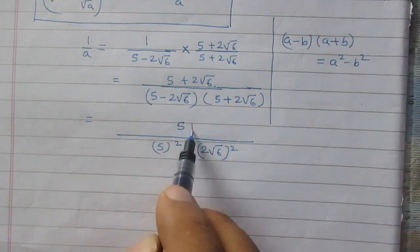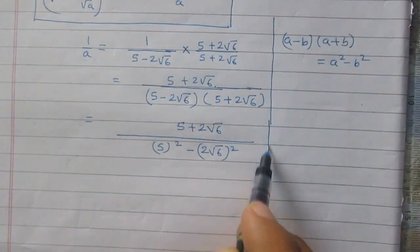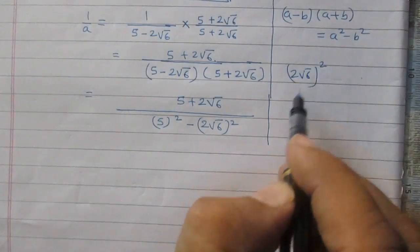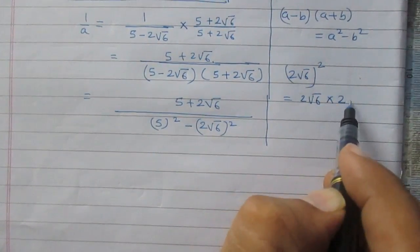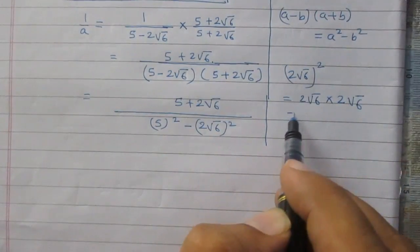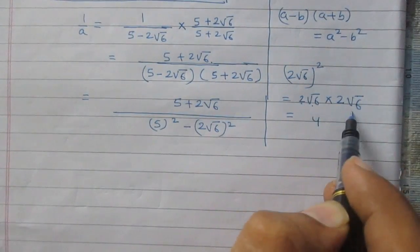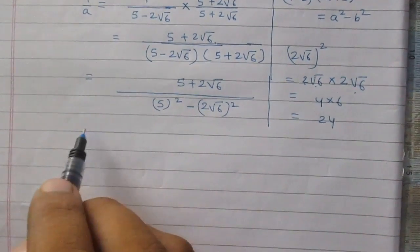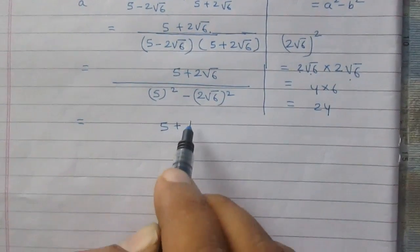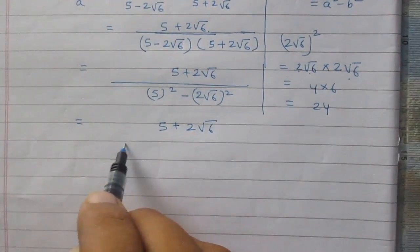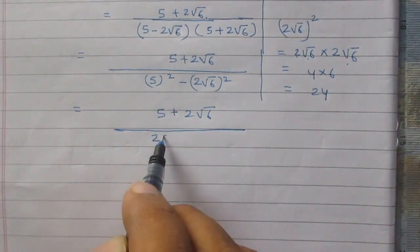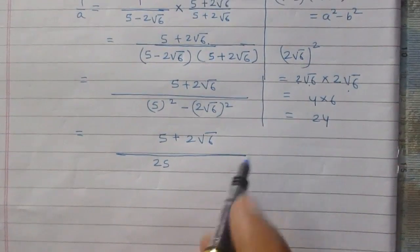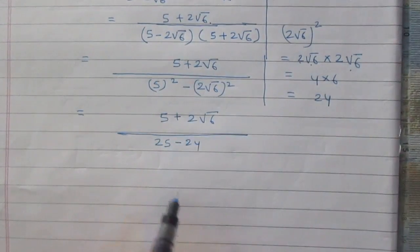The numerator remains as 5 plus twice of square root 6. Now, twice of square root 6, whole squared, means 2 multiplied by 2 is 4, and square root 6 multiplied by square root 6 is 6, giving 4 times 6 equals 24. So the denominator simplifies to 25 minus 24, and since of the negative sign, it is 25 minus 24.